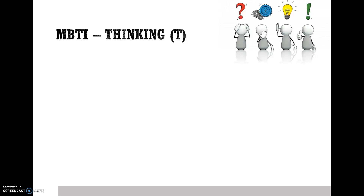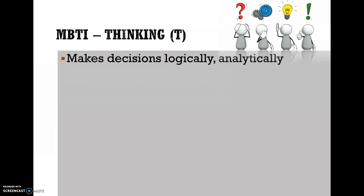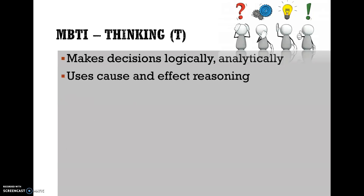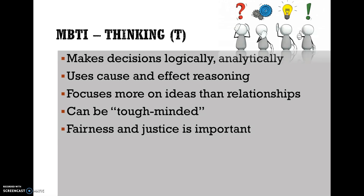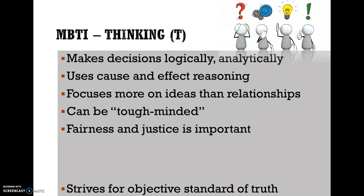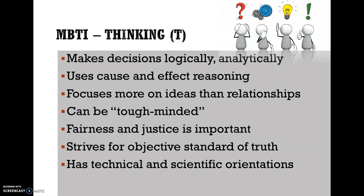The next letter is T — Thinking. Thinking types make decisions logically and analytically; some people refer to them as left-brain thinkers. They use cause-and-effect reasoning, focus more on ideas than relationships, and can be tough-minded. Fairness and justice are important to them. They strive for an objective standard of truth and have technical and scientific orientations.